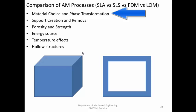In FDM, the phase transformation involves a filament that is melted, allowed to flow out of the nozzle, deposited, and cooled to become solid again. In laminated object manufacturing (LOM), there is virtually no phase transformation — the raw material remains in the same condition throughout, and high temperatures are not involved.